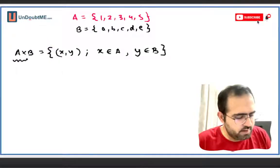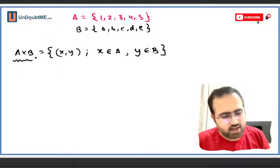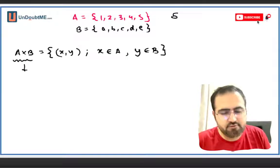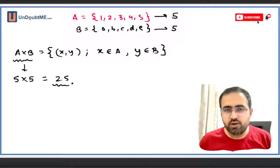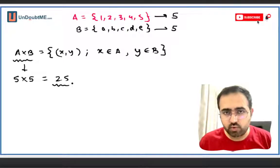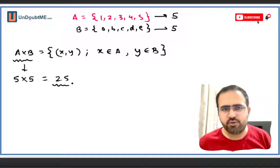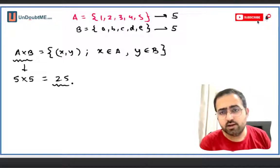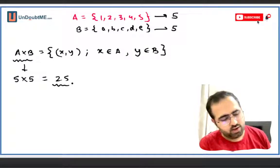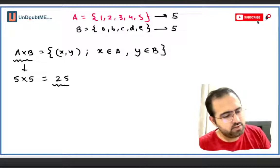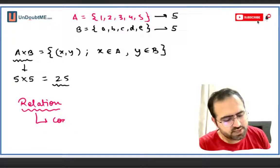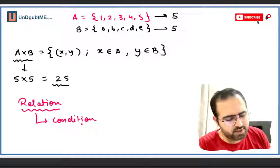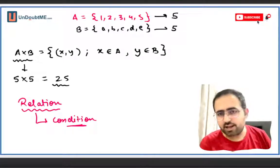If I actually compute the product, there are 5 elements in the first set and 5 elements in the second set, so 5 times 5 gives 25 elements in the product. This is also clearly seen with the help of a diagram. But we still haven't talked about relation. So first, let's understand what a relation is — mathematically, a relation is nothing but a condition.